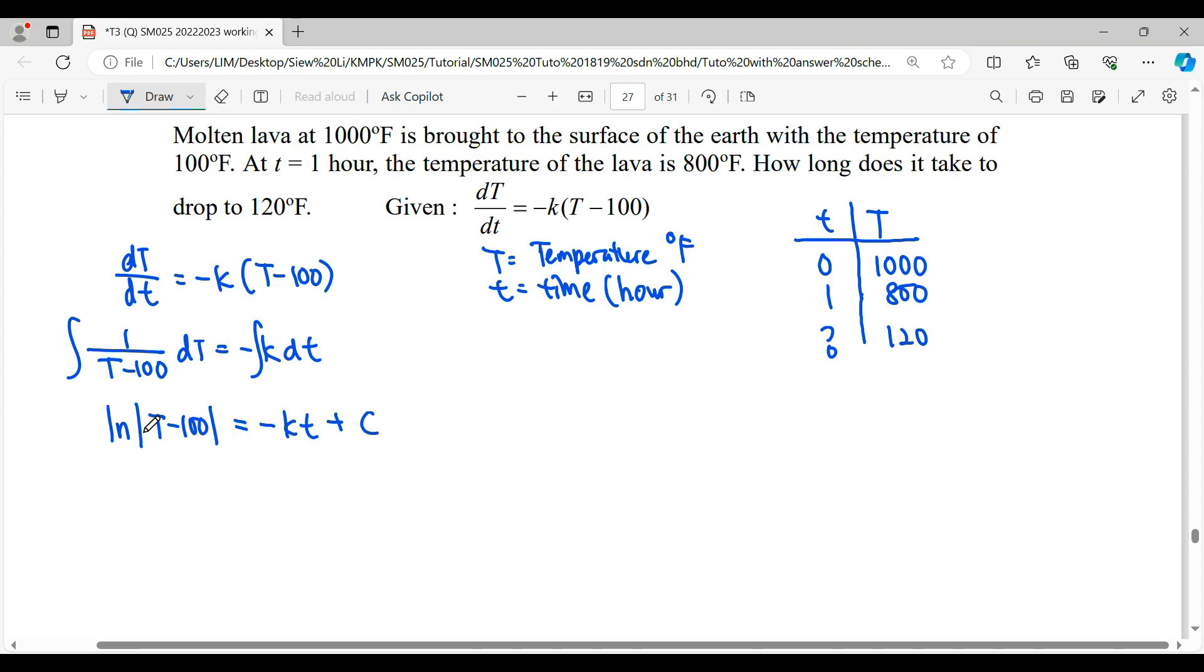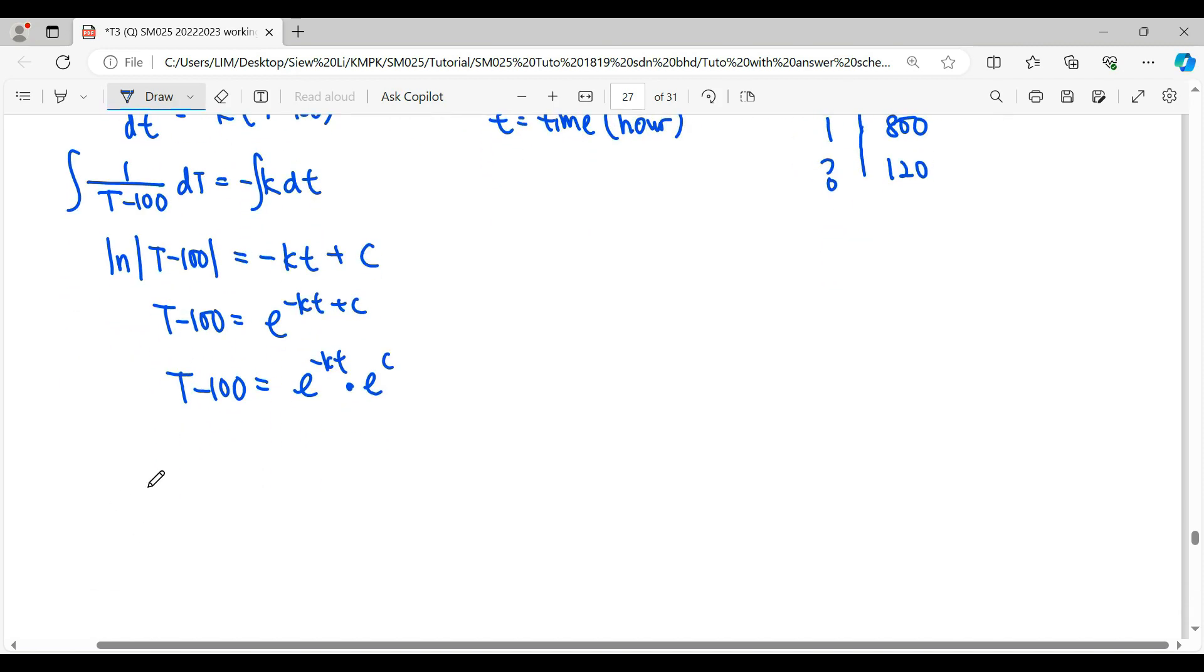We have to simplify to get general solution, which is T temperature in terms of time. So we have to simplify this ln. Unlock the ln, it will be e to the power of negative Kt plus C. When we're having the power plus, means we're having the same base multiplied together. So the e^C here, we can take note as A. Then at the same time, we simplify this 100 to the right-hand side.